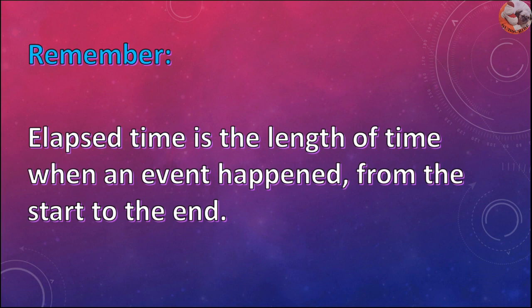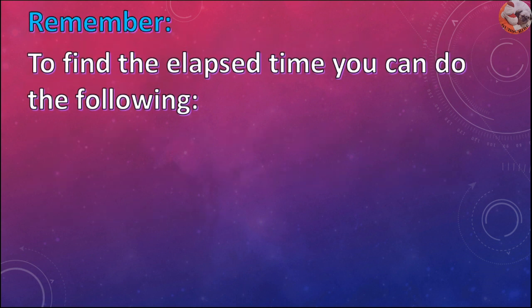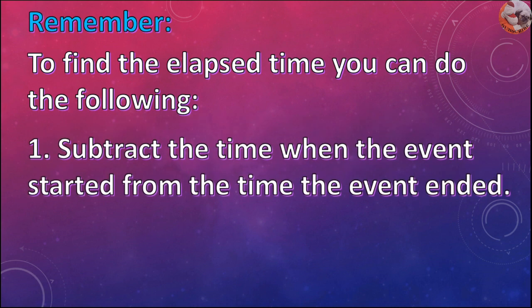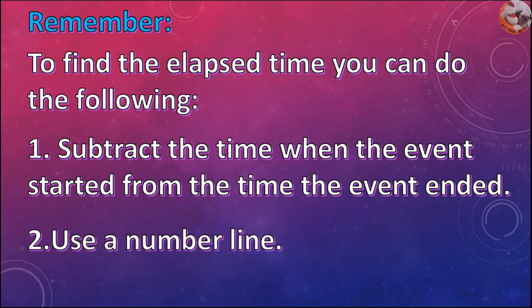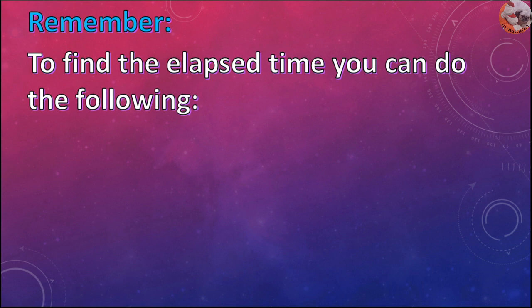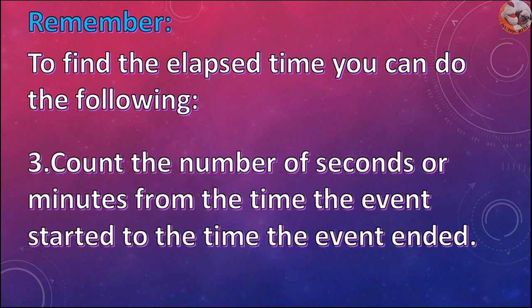Remember, elapsed time is the length of time when an event happened, from the start to the end. To find the elapsed time, you can do the following: 1. Subtract the time when the event started from the time the event ended. 2. Use a number line. 3. Count the number of seconds or minutes from the time the event started to the time the event ended.